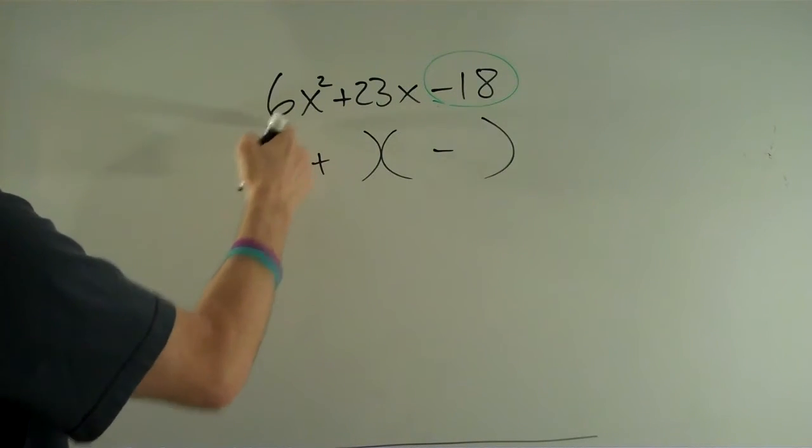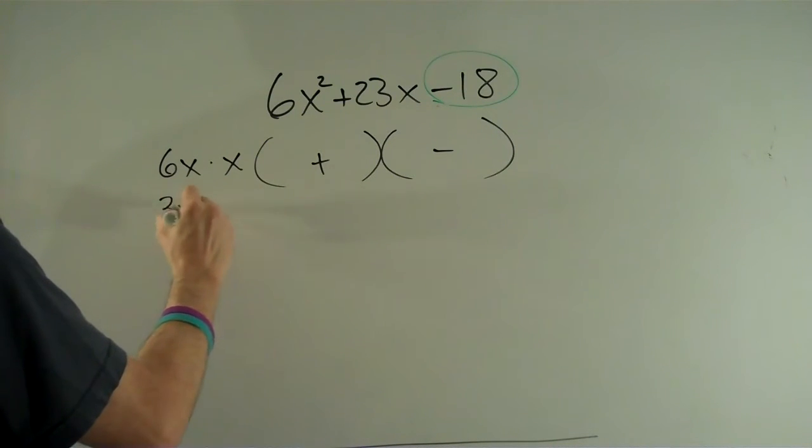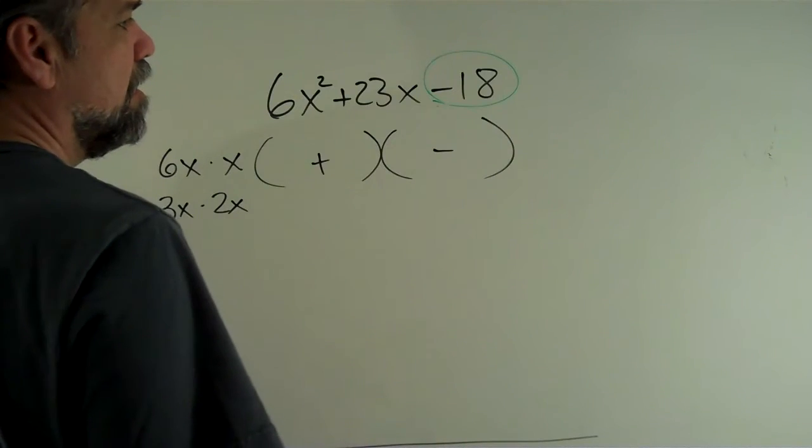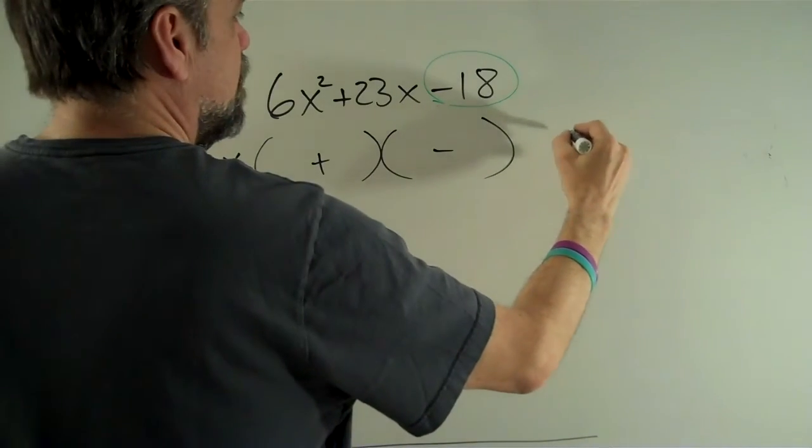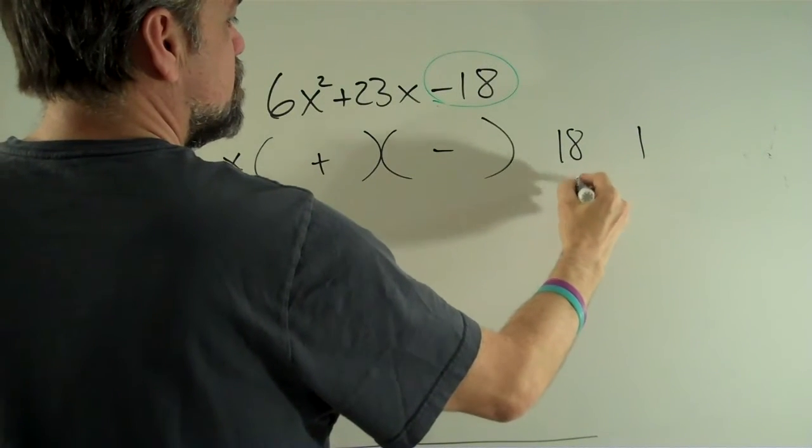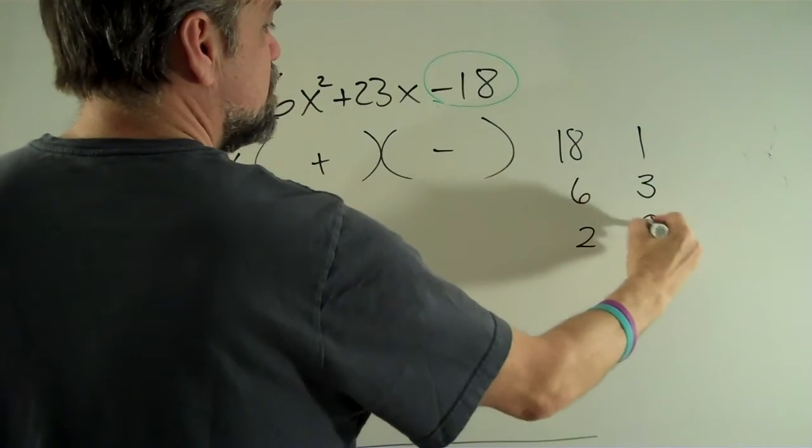I know that the way we can get 6x² is by doing 6x times x or 3x times 2x. And that's all I have there. And then to get 18, I can do 18 times 1 or 6 times 3 or 2 times 9.